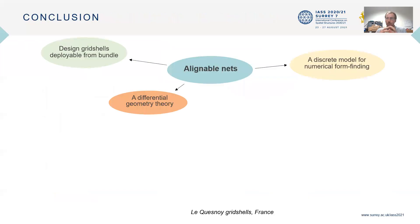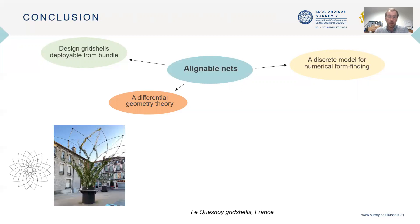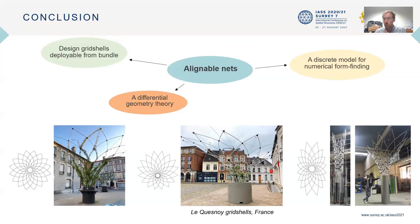To conclude, alignable nets are a really interesting tool to understand and model grid shells deployable from bundles. You have a differential geometry theory that allows you to understand the possible shapes, and a discrete model, quite simple, that allows for numerical form-finding — implemented in Kangaroo 2 by adding a new goal to account for alignability, so no special framework is needed. At Urban Canopy, we used to have only one grid shell in our catalogue with a simple symmetry of revolution, and with alignable grid shells we are able to get variations of these shapes that fulfill quite different architectural constraints. Thank you for your attention, I'll be glad to take any questions.